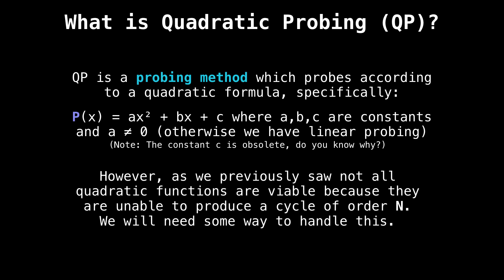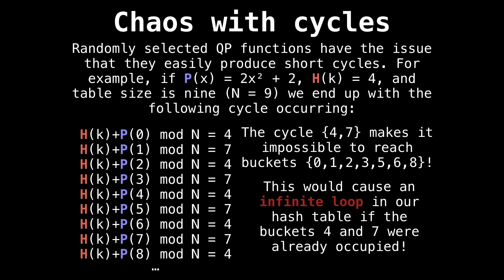But as we saw in the previous videos, not all quadratic functions are viable because they don't produce a cycle of order N and we might get stuck in an infinite loop. So as it turns out, most randomly selected quadratic probing functions will end up producing a cycle.